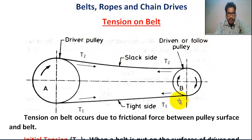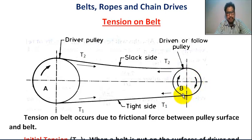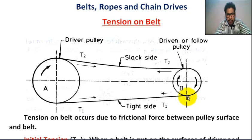This is the front view of an open belt drive system. This is driver pulley A, rotating in the clockwise direction. This is follower pulley B, also rotating in the clockwise direction. The belt from driver pulley to follower pulley is called the slack side. The belt from follower pulley to driver pulley is called the tight side.